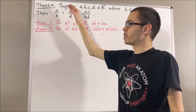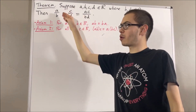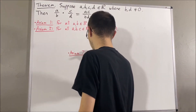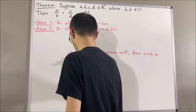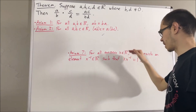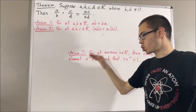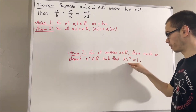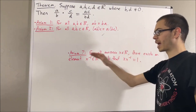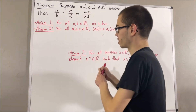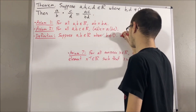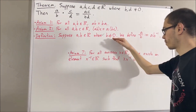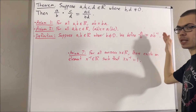As for our definition of division, let's first remind ourselves of axiom 7. For all non-zero real numbers x, there exists a real number which we call the reciprocal of x, that satisfies the property that x times the reciprocal of x is equal to 1. And using axiom 7, our definition of division is as follows: suppose A and B are real numbers where B is not equal to 0. We define A over B to be A times the reciprocal of B.